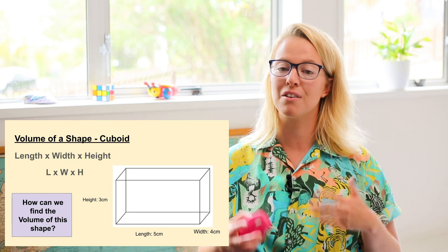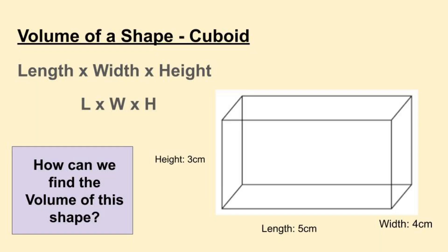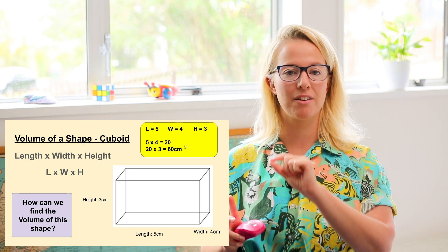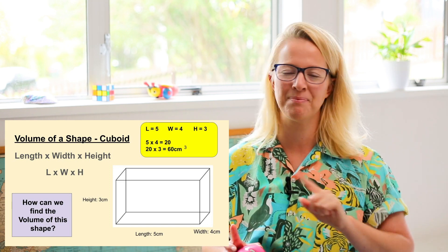Let's use that rule to find the volumes of different cuboids. For this first one: length is 5 cm, width is 4 cm, and height is 3 cm. We do length times width first — 5 times 4 equals 20. Then we take that answer and multiply by the height: 20 times 3 equals 60. Since we're measuring in centimeters, we write 60 centimeters cubed — make sure you include that little 3.